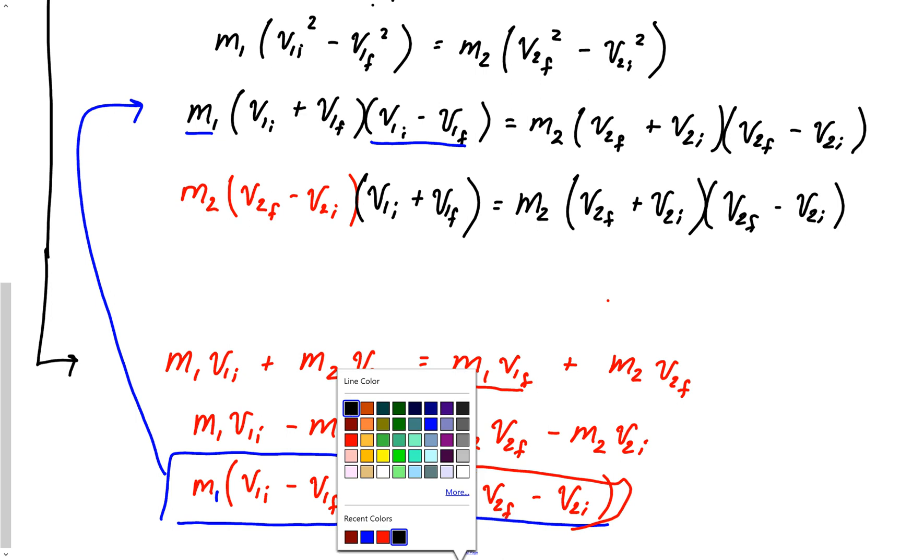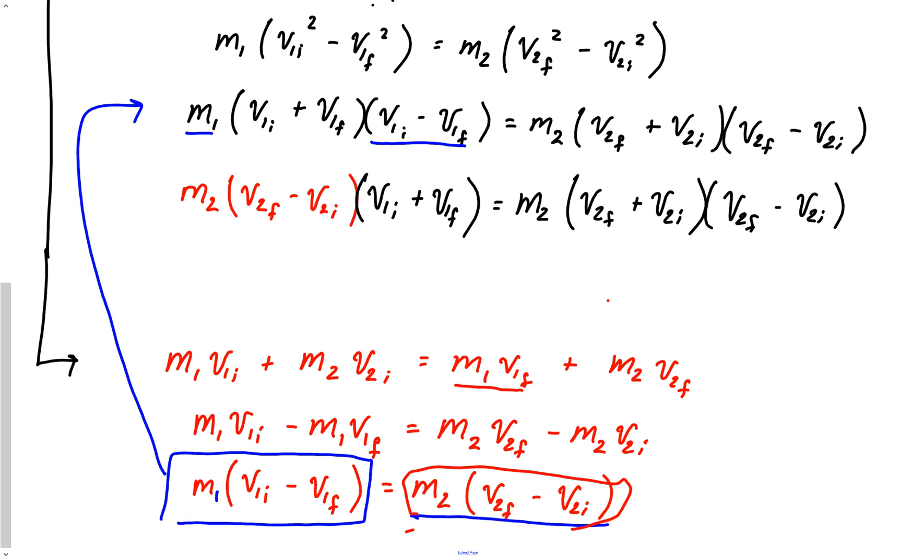I think you should get bonus work for doing this, honestly. And now look at what happens. M2, M2 cancels out. Wait a minute, V2 final minus V2 initial, V2 final minus V2 initial, that cancels out. And the only thing I'm left with is velocity 1 initial plus velocity 1 final equals, and I'm going to rearrange it, instead of V2 final plus V2 initial, write V2 initial plus V2 final, and there I have got my equation derived.